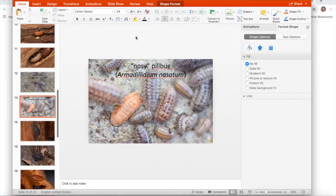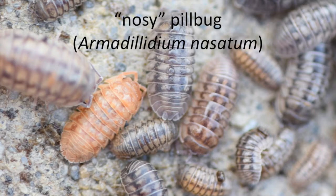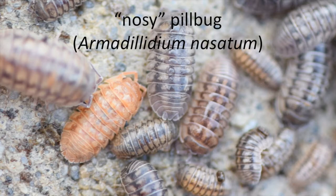Here are different color variations of Armadillidium nasatum — some more brownish, and even a bright orange one — but all still show that same general patterning. I'd really encourage students to try to identify the differences between species. They could share pictures with each other, teachers could share pictures and ask students to identify the species, and I'm also happy to look at photos teachers share with me to identify what species they're seeing.